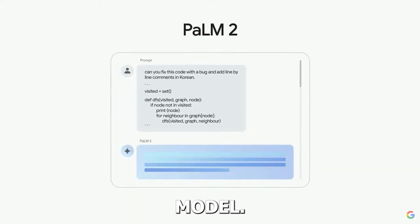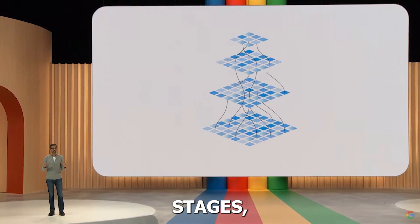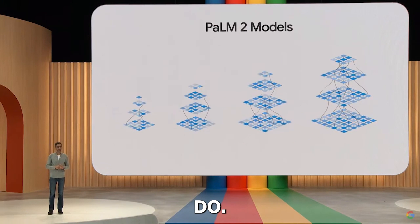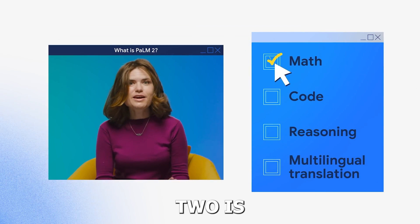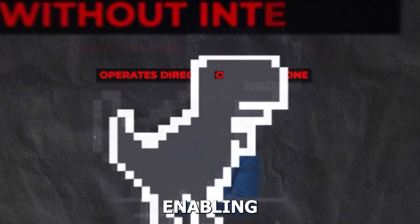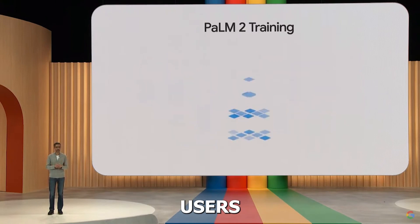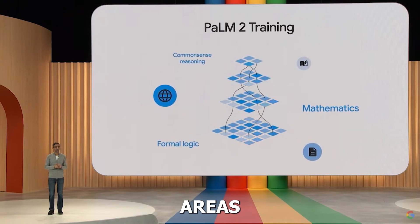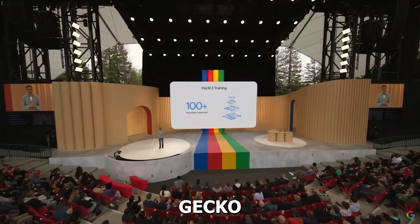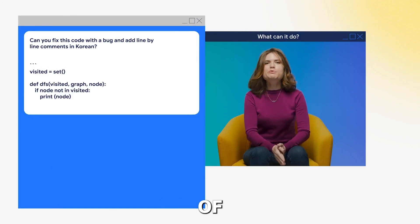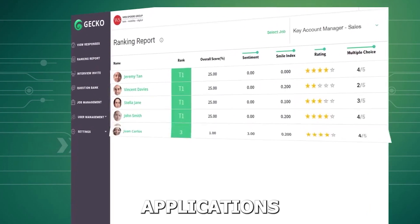Palm 2 is not your ordinary language model. It's a game-changer built in five distinct stages, each adding unique capabilities and pushing the boundaries of what AI can do. One of the most remarkable aspects of Palm 2 is the introduction of Gecko — a lightweight version of Palm specifically designed to run natively on mobile devices, enabling offline applications. This means users can access large language models' impressive capabilities even in remote areas without internet connectivity.